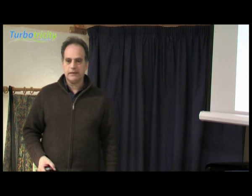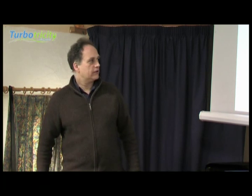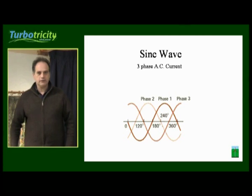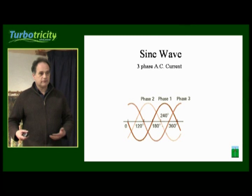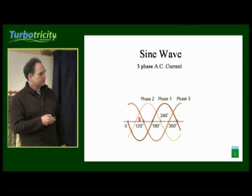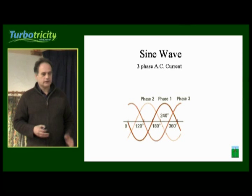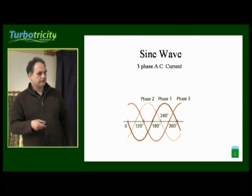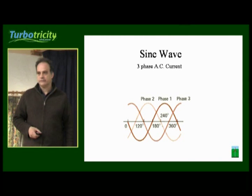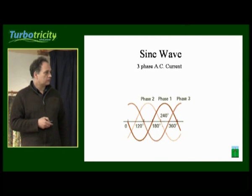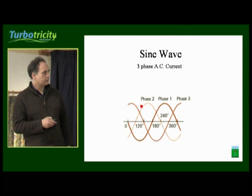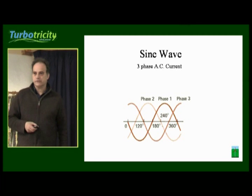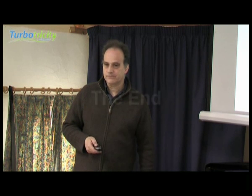Generally speaking, in any generator you're looking at a three-phase system where there are three wires effectively coming off the generator, and the three of them are jumping from positive to negative in a cycle. This is known as three-phase — three phases all alternating between positive and negative. Quite often the voltage between one phase and another in a 240-volt system is 400-and-something volts between the different three phases.